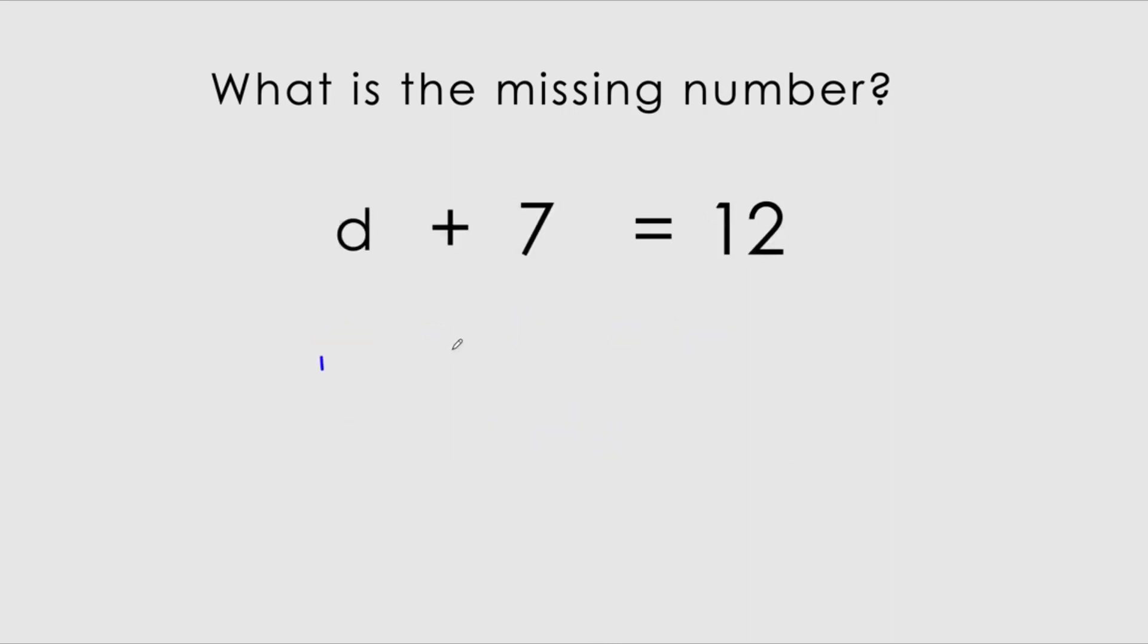Now we've got d plus 7 equals 12. So we know that d is smaller than 12 because d plus 7 gives us 12. So now what plus 7 gives us 12? 5 plus 7 gives us 12. So d is actually equals to 5.